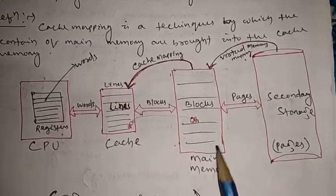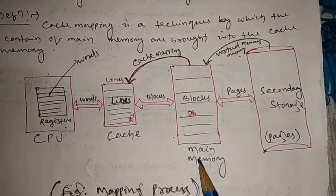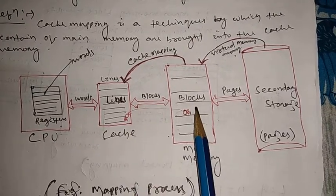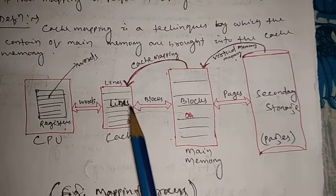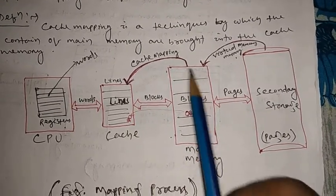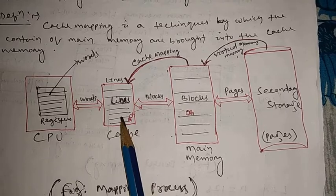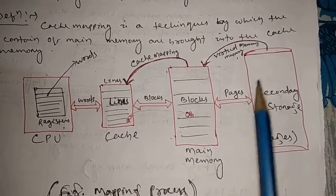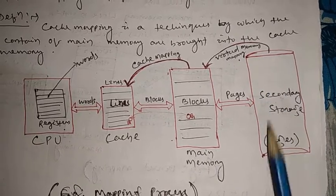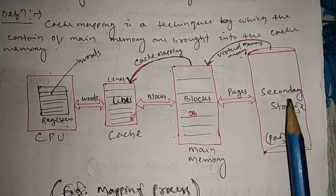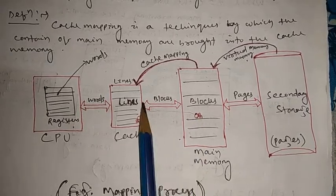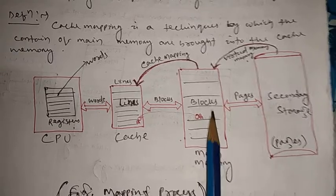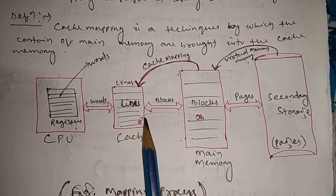The main memory size is very large compared to cache. So how can it store all that data? There are different types of techniques for how blocks are stored in cache memory. We will not go into virtual memory mapping since it is not in the syllabus. We will discuss only cache mapping — how a huge amount of memory information is stored in cache memory for faster CPU execution and to enhance CPU performance.